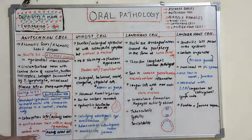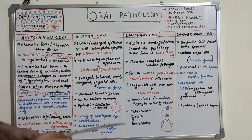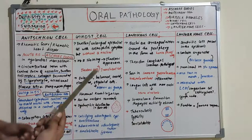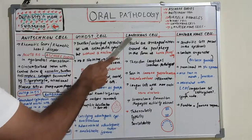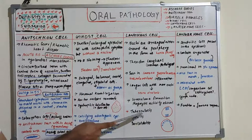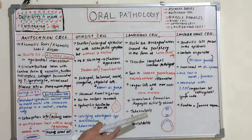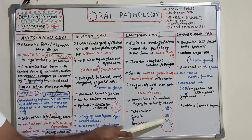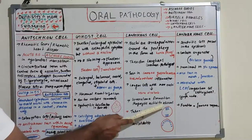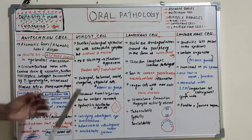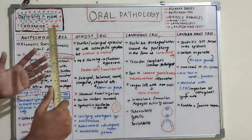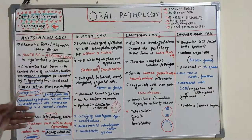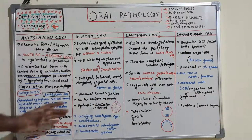Langhans cells are seen in immunogranulomatous inflammation. If cells are larger with more nuclei, it indicates more virulence. They represent granuloma formation with the absence of phagocytic activity. These Langhans cells are seen in granulomatous conditions like tuberculosis, syphilis, and sarcoidosis — the peculiar arrangement of nuclei in a horseshoe or ring type without any phagocytic activity.